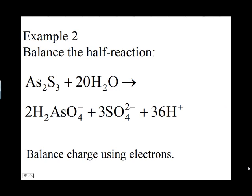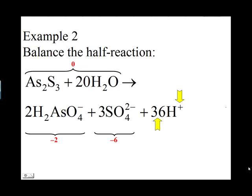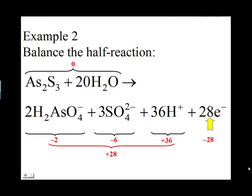The next step is to balance charge using electrons. On the left side the net charge is zero. On the right side, two H2AsO4⁻ have a charge of negative two, three SO4²⁻ have a charge of negative six, and thirty-six H+ have a charge of positive thirty-six, giving a net charge of positive twenty-eight. To give the right side a net charge of zero, add twenty-eight electrons. The right side now has positive twenty-eight plus negative twenty-eight, equal to zero. This half reaction is now balanced.